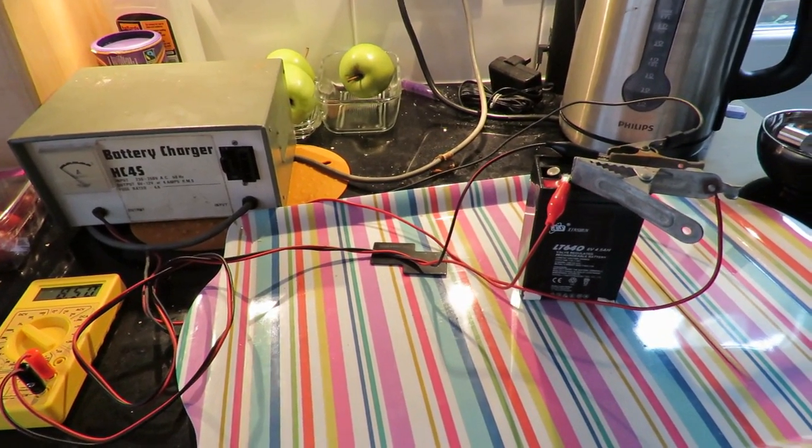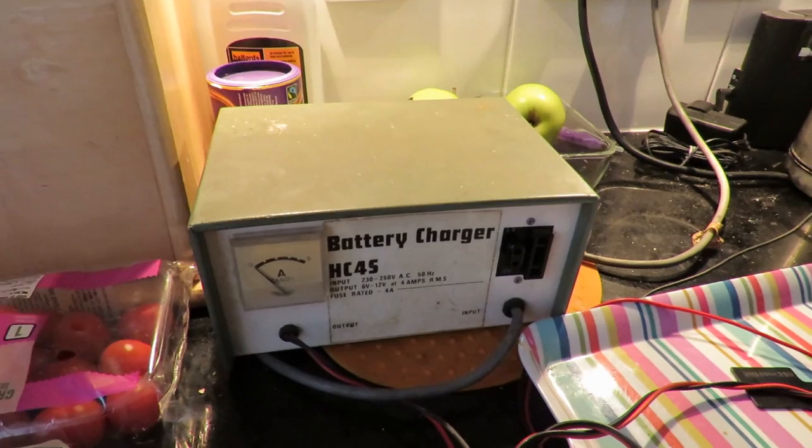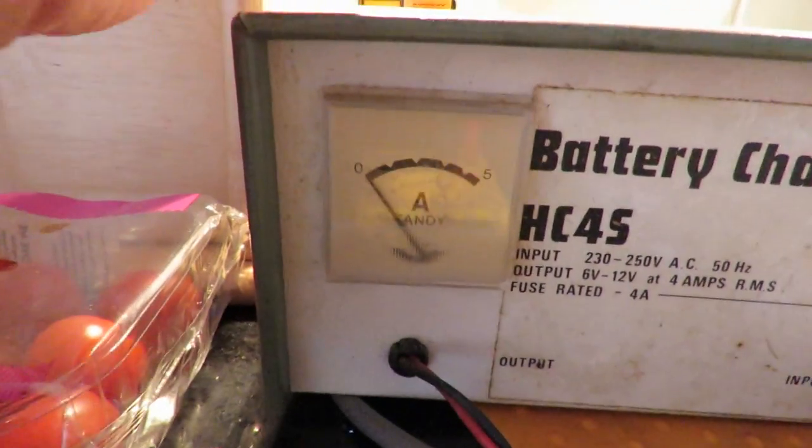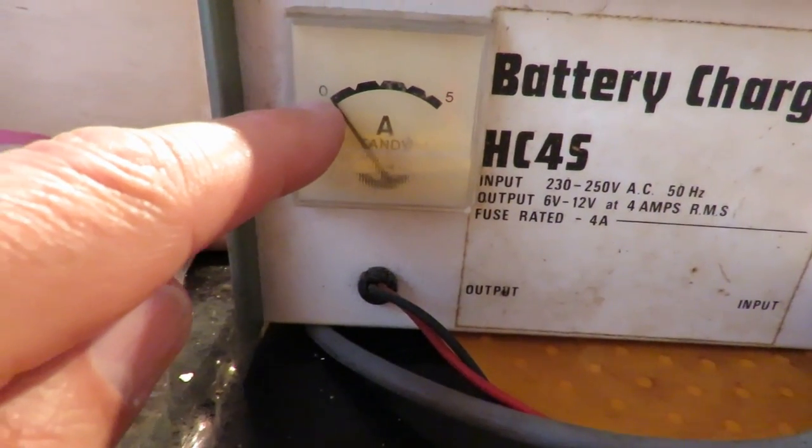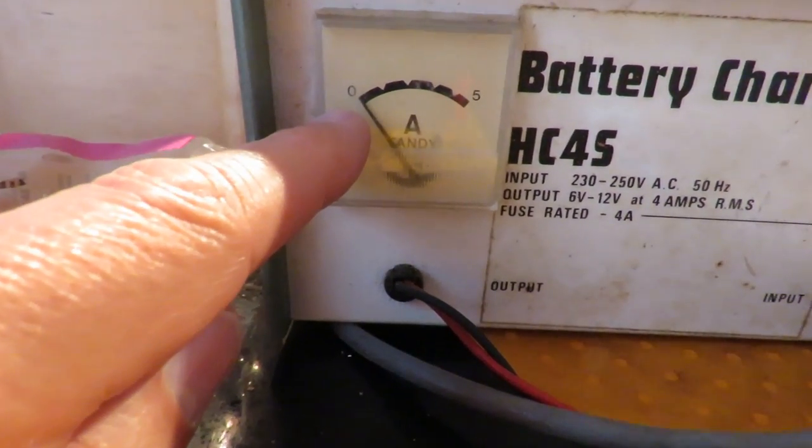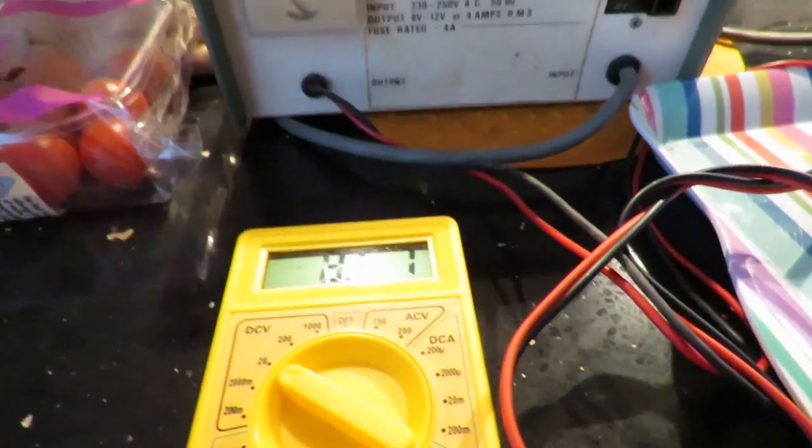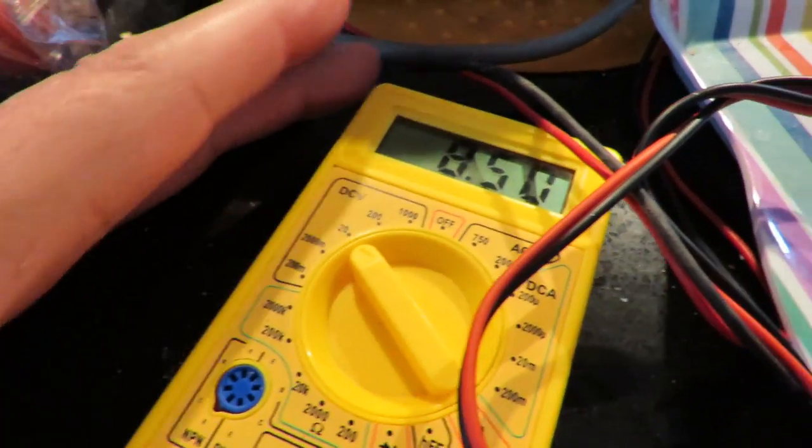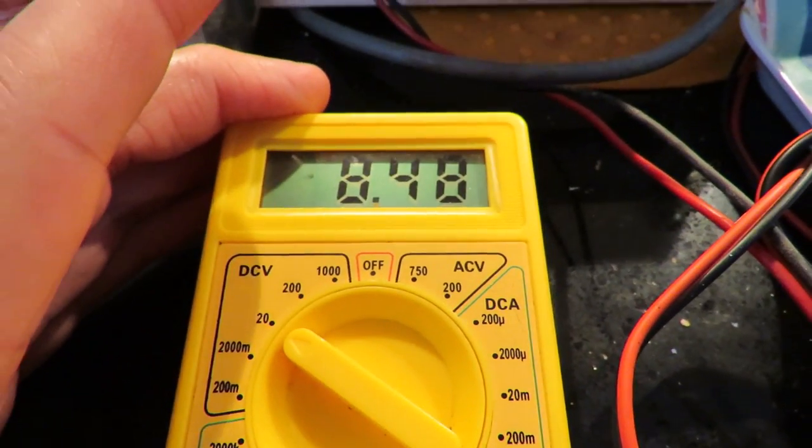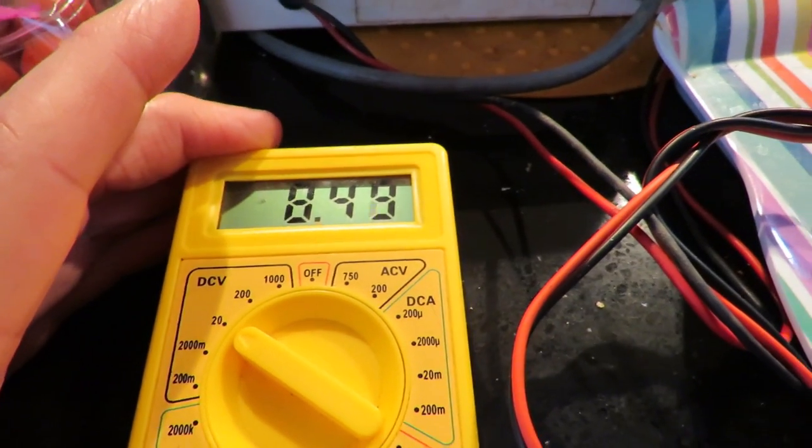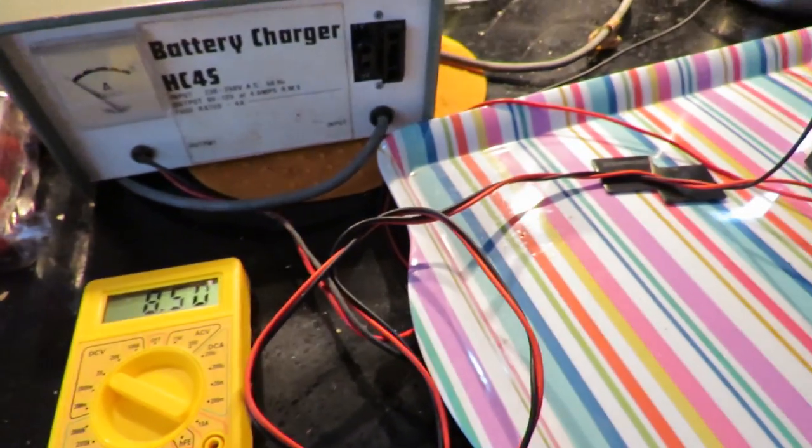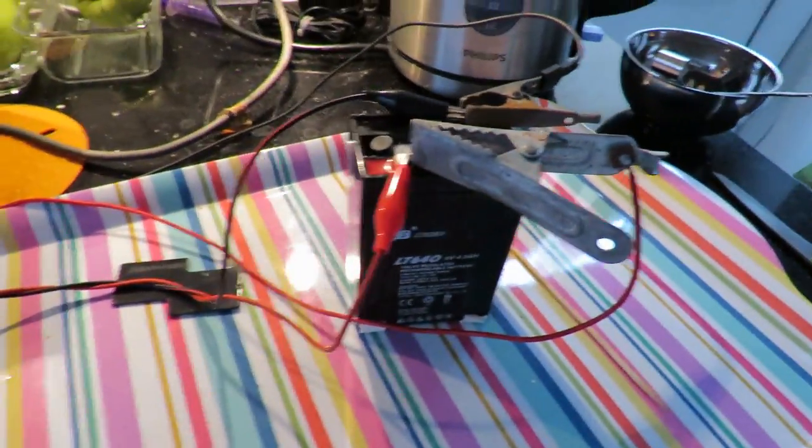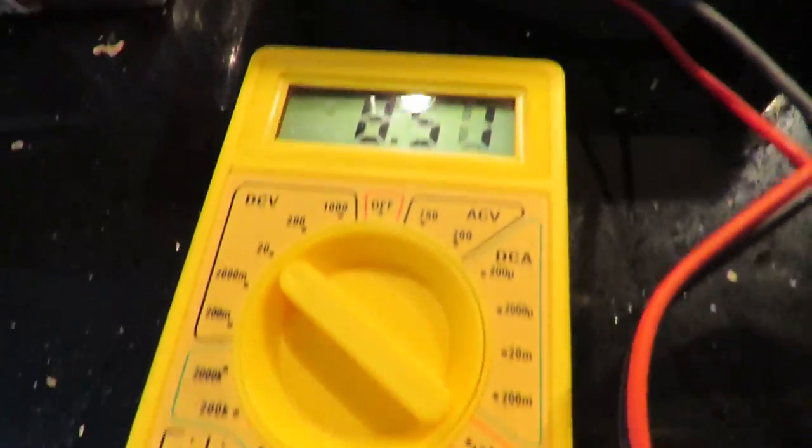That's been going for about an hour now on the six volt setting. Still virtually no current although it has raised up a little bit from below zero. It's still about eight and a half volts in there. So let's turn it off and see what it drops back to.